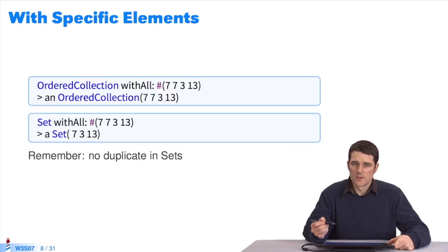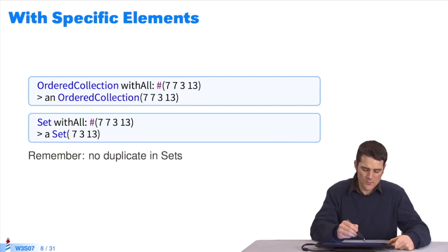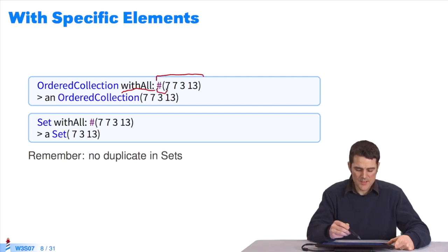There are other existing methods to create pre-initialized collections with ALL:, for instance. I'll pass a literal collection. A literal collection starts with hashtag. I'll create a new instance of OrderedCollection which will contain all the elements passed when it was created. I could do the same with Set. In a set, you can't have any duplicates. The number 7, which you have twice in the literal collection, can't end up twice in the set.